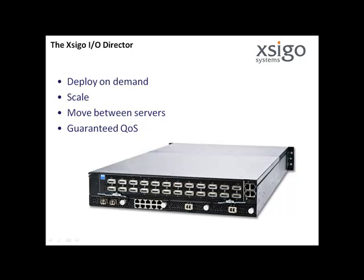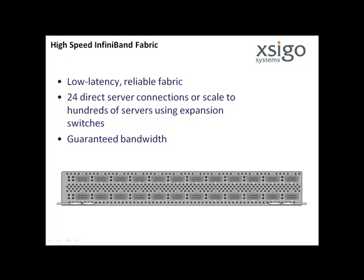Like physical interfaces, each virtual interface is given a unique identifier from a pool of addresses assigned to each SEGO I.O. Director. Virtual NICs get MAC addresses, and virtual HBAs get worldwide names. The following hardware and software components in the SEGO I.O. Director provide the fundamental building blocks to deliver SEGO virtual I.O. to servers.